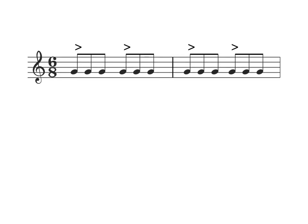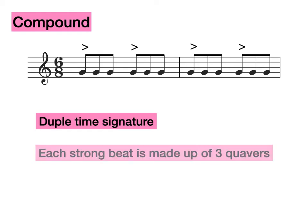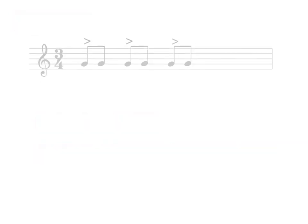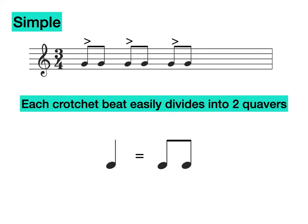Let's visit our 6/8 time signature. Is this a simple or a compound time signature? That's correct, this is a compound time signature. We know it's a duple time signature, but the reason it is compound is because each strong beat is made up of three quavers. What about 3/4? It is simple because each crotchet beat can easily divide into two quavers.